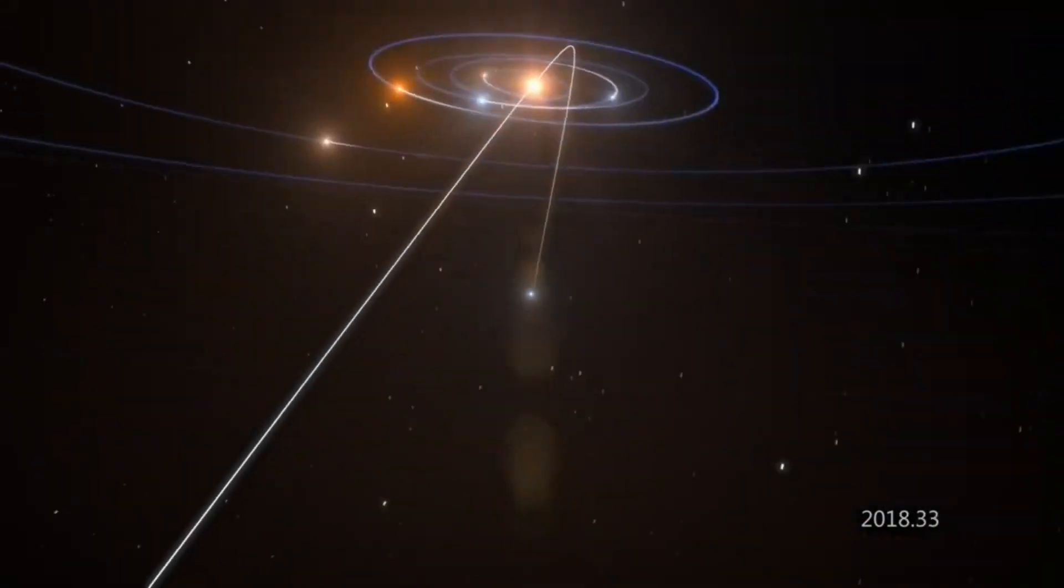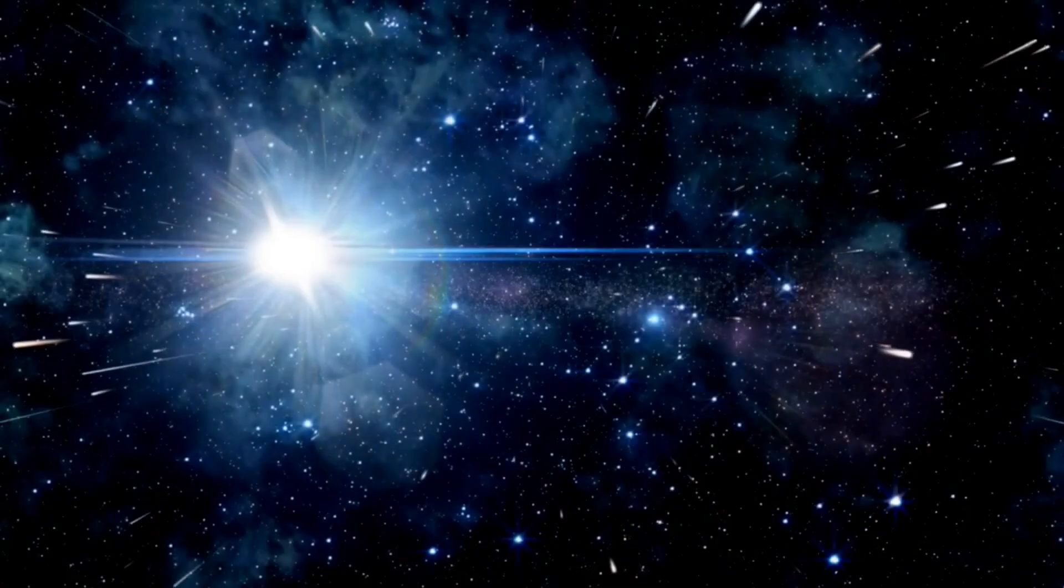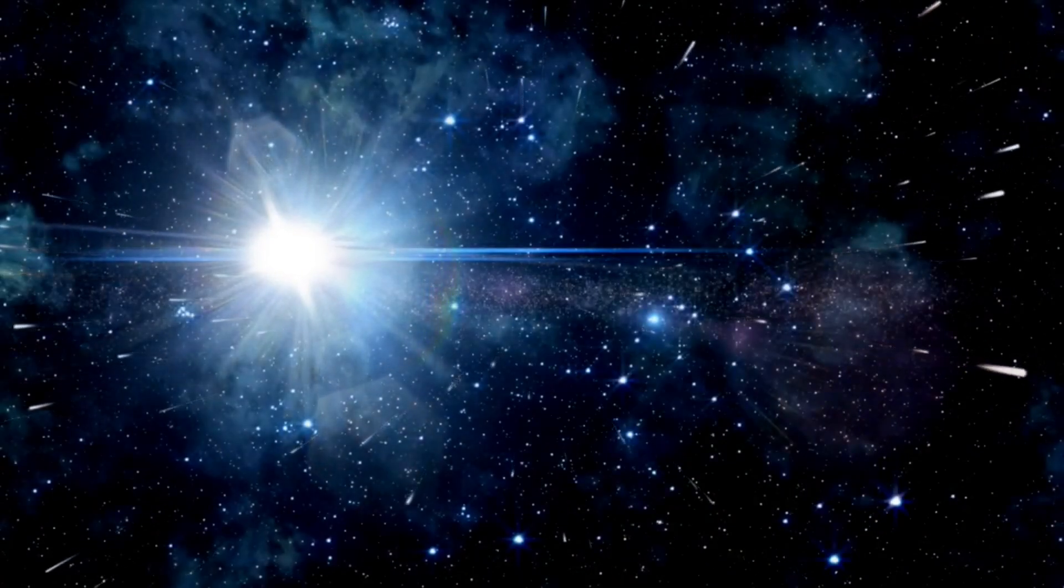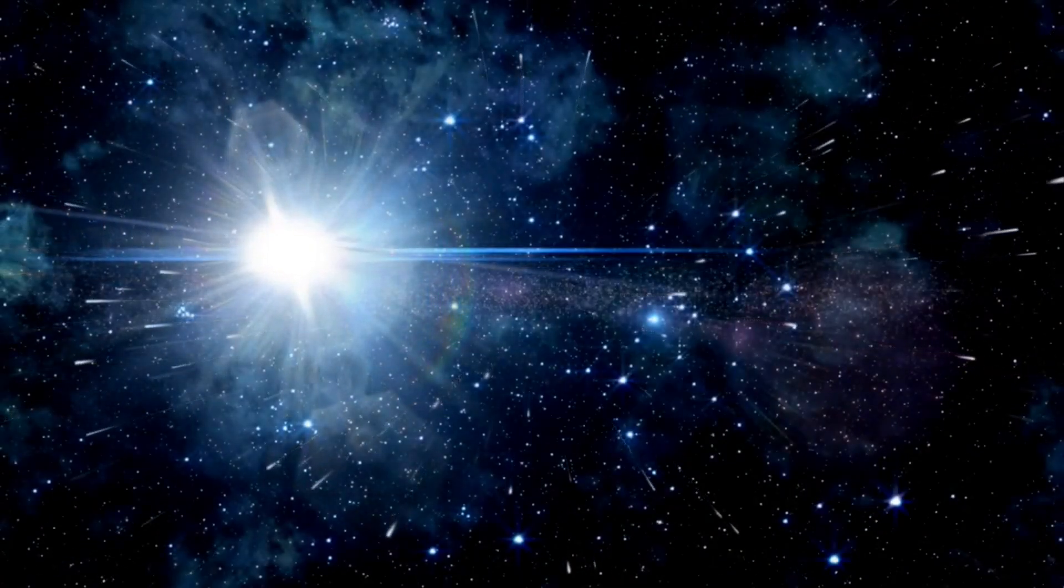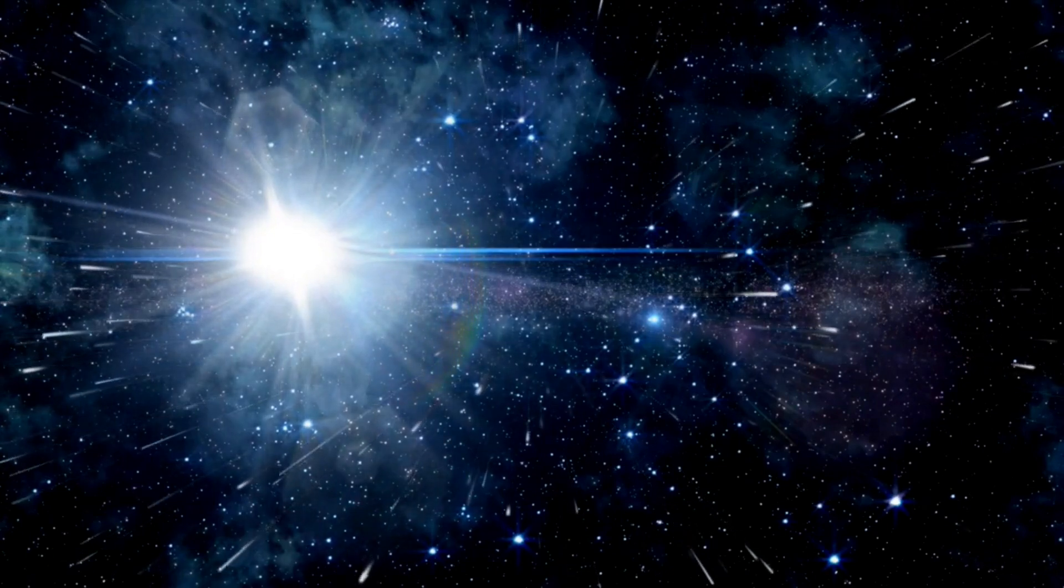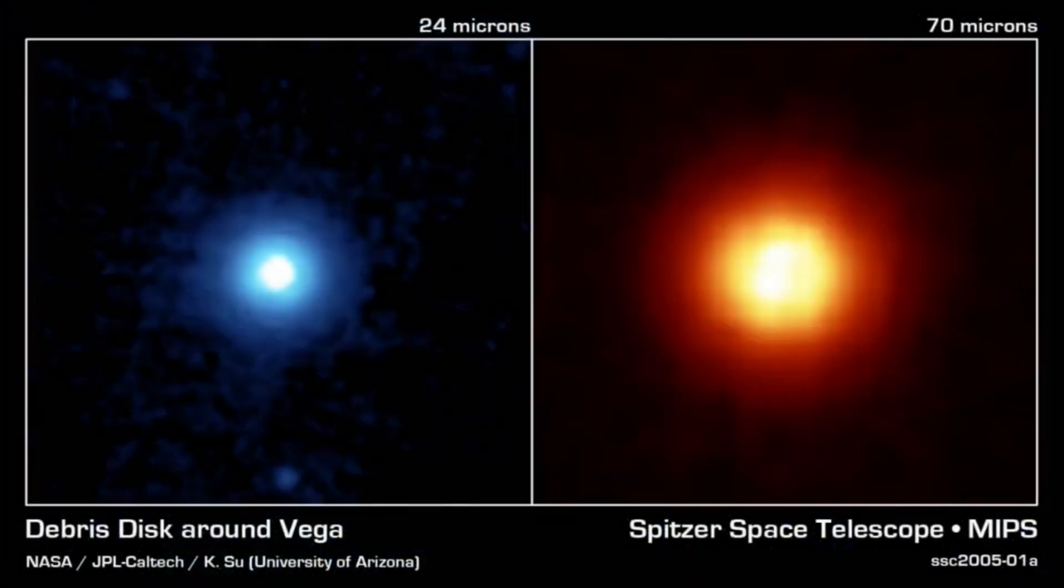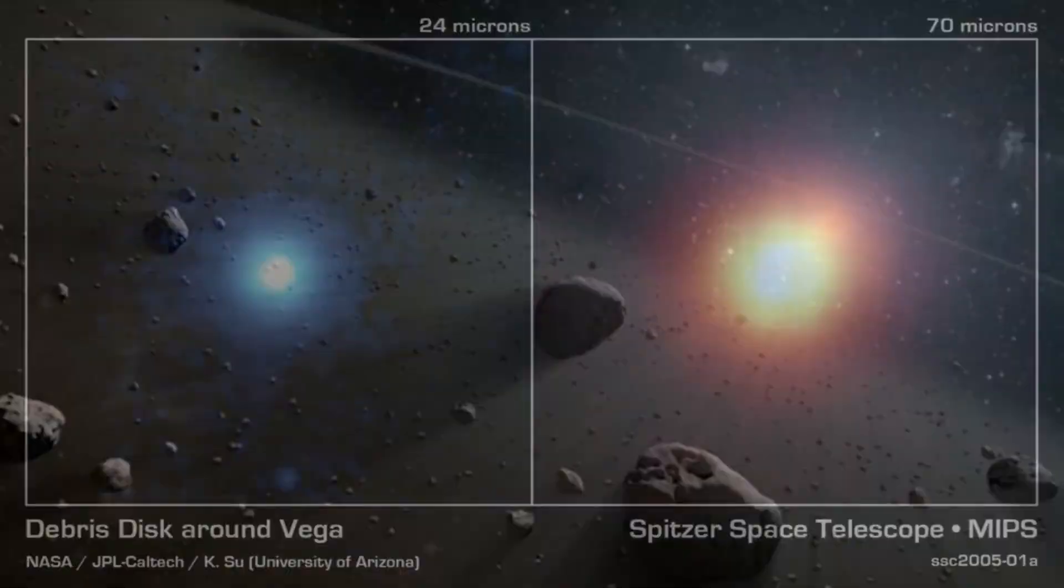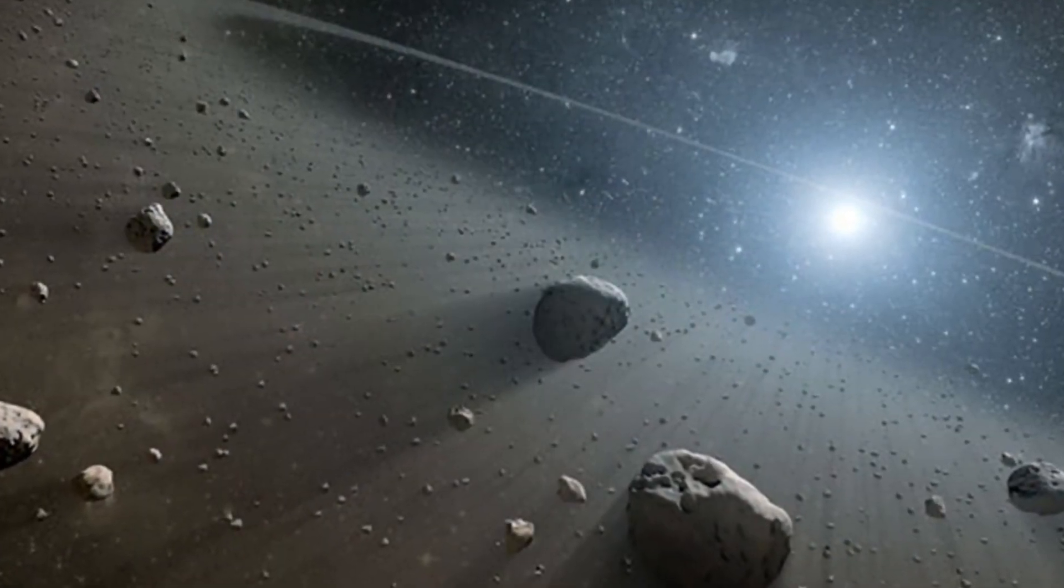Well, we can observe dust disks around other stars. For example, the star of Vega, or Alpha Lyrae, is well known to have a dust disk surrounding it. And we can see it here in this picture taken with the Spitzer Space Telescope. So other stars do certainly have large blobs of stuff floating around them.